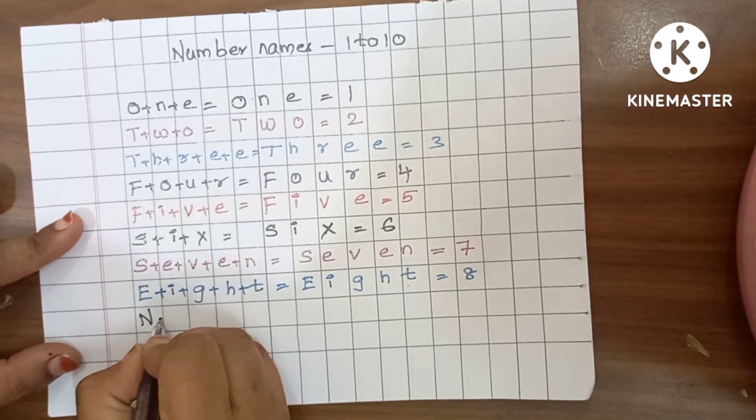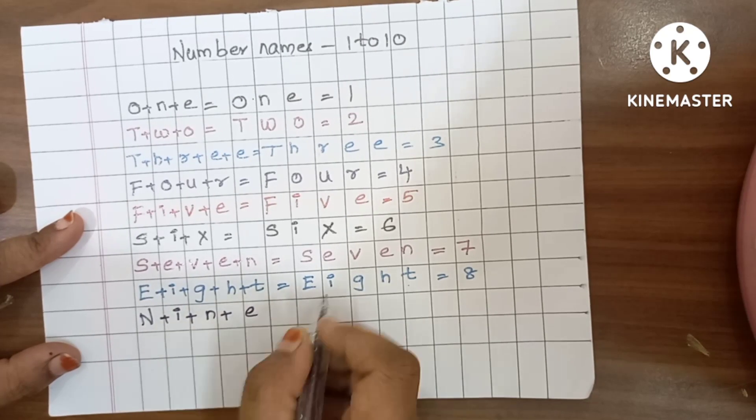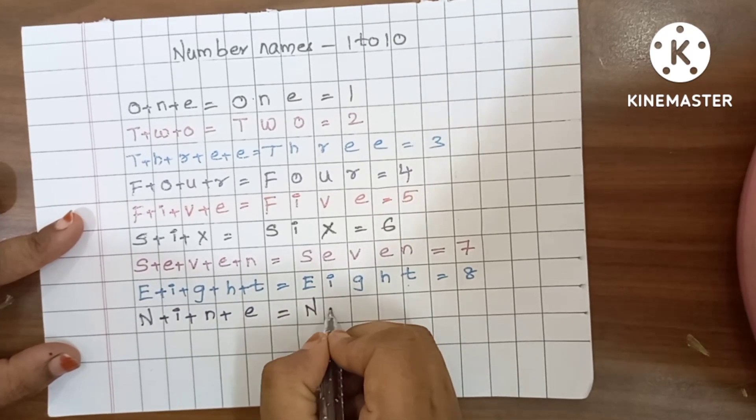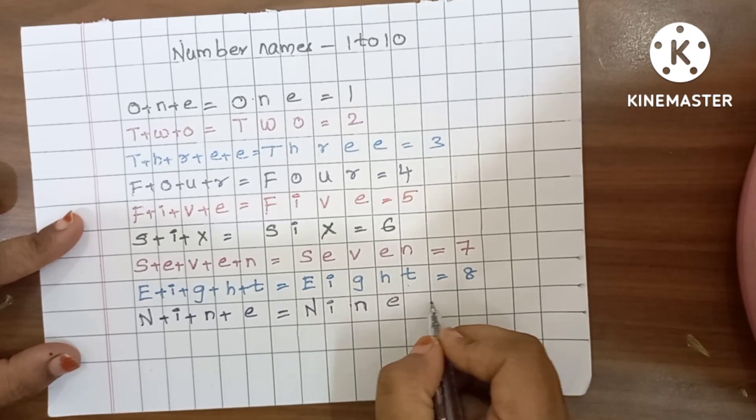9. N plus I plus N plus E is equals to 9. N, I, N, E, 9.